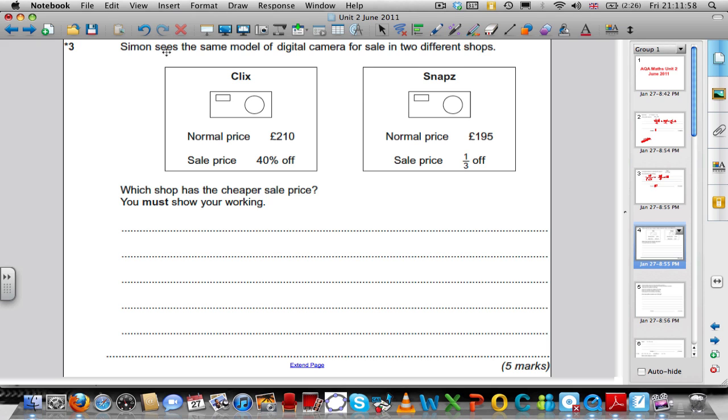Question 3. This talks about the sale of digital cameras in two different shops. In the shop Clicks, the normal price is £210 and you get 40% off. In the shop Snaps, the normal price is £195 and you get one third off. Which shop is cheaper? You must show your working.